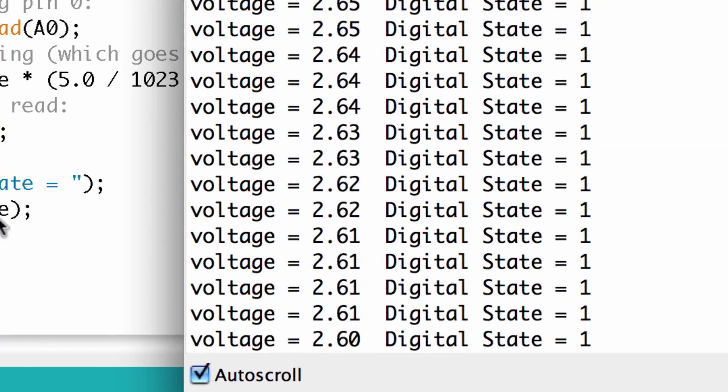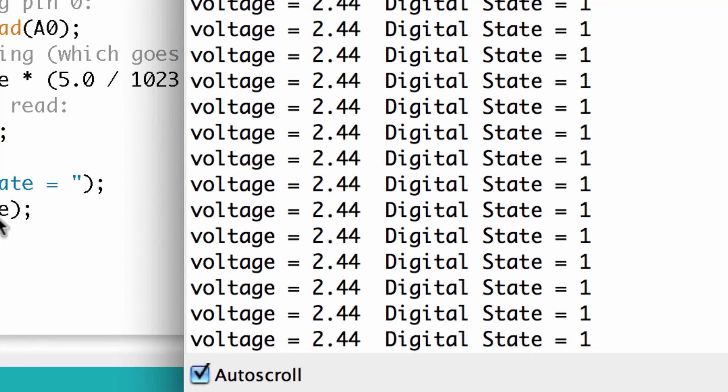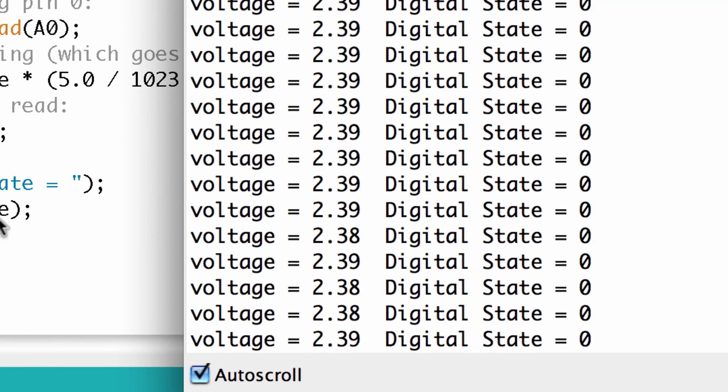How low can we go? I'm gonna keep going. I'm at 2.44 and I'm still reading high voltage. It's still that one. Oh now look at that, now look at the state. I'm at 2.39 and we're reading a low.